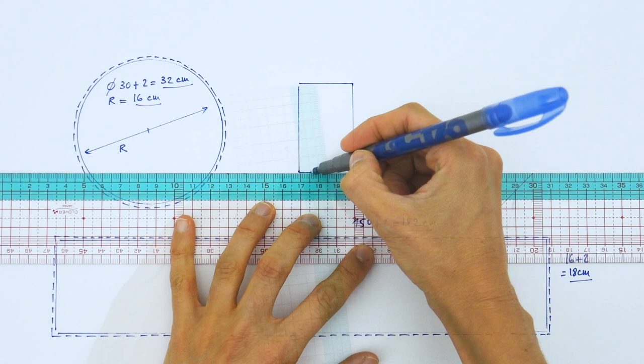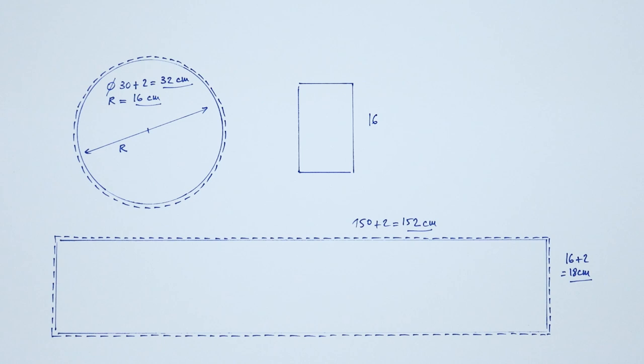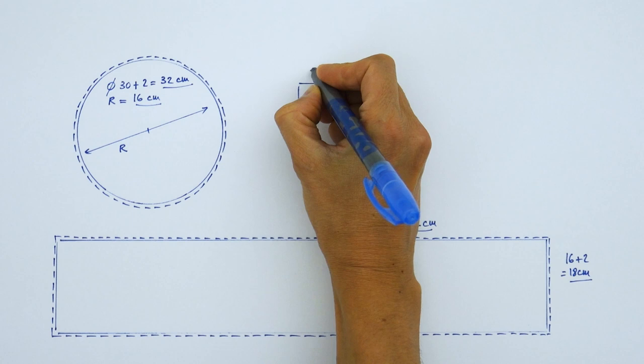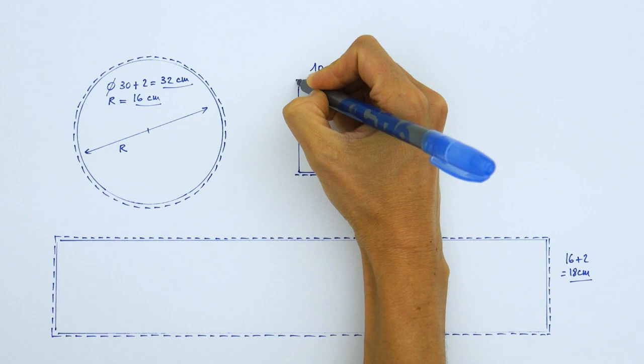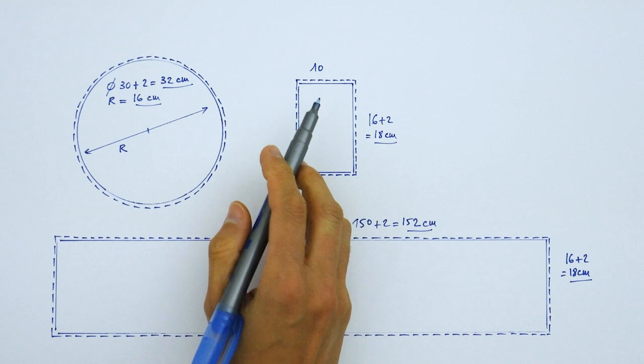Now the last piece we need to trace is a small rectangle to make the handle. The length of this rectangle equals the chosen height of our Zafu. Today it's 16 centimeters. The width of the rectangle should be as wide as you wish your handle to be. For me 5 centimeters, which I double since we need it to be double layered. 2 times 5 equals 10 centimeters. And again we add 1 centimeter of seam allowance all around, and we get 16 plus 2 equals 18 centimeters for the length and 10 plus 2 equals 12 centimeters for the width.